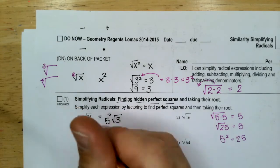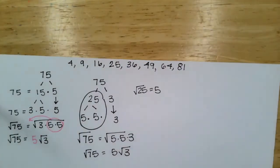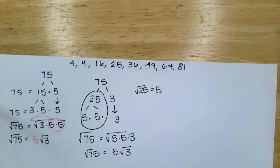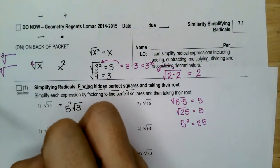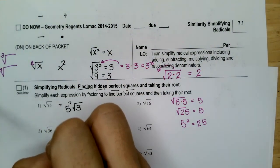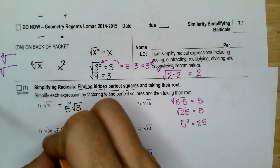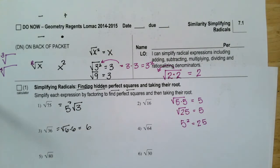For the square root of 36: 36 is just 6 times 6, so those come out and the square root of 36 is just 6.